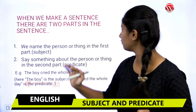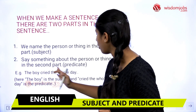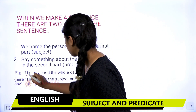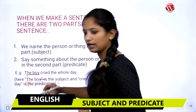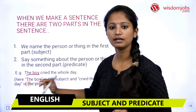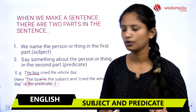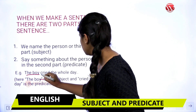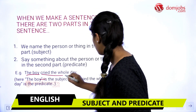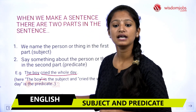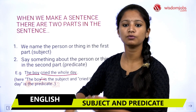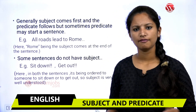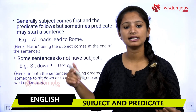For example: 'The boy cried the whole day.' Here, 'the boy' is the subject — 'boy' is a noun, so 'the boy' is the subject. And 'cried the whole day' is the predicate, which describes what the boy is doing.